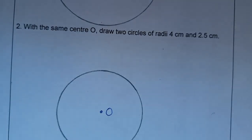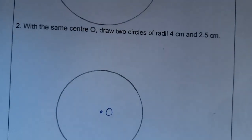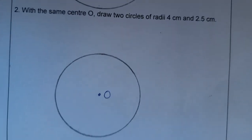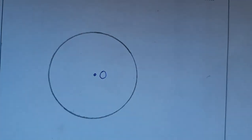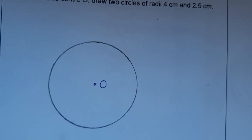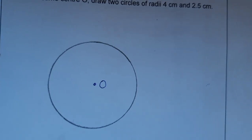This is the circle, you can see. Now the circle of radius 2.5 is completed. Now we are going to make 4 centimeter.